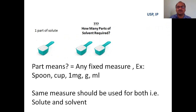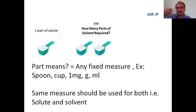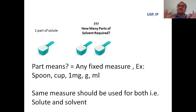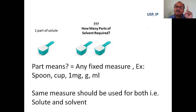Take a standard spoon — that's one part. The same spoon you have to use for both the solute and the solvent. For example, like the plastic spoon we use for measuring washing powder. Any fixed measure — the same measure should be used for both. What you use for the solute, the same you have to use for the solvent. That is called a 'part.'